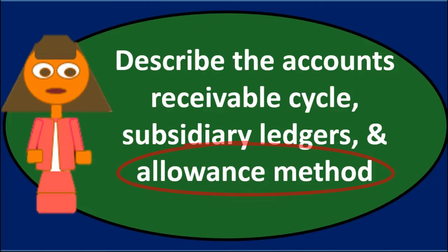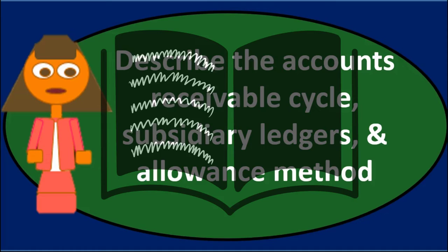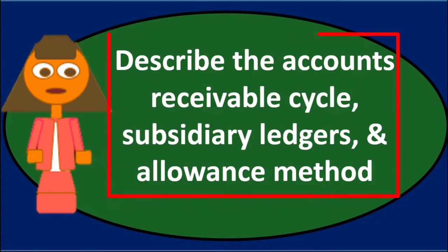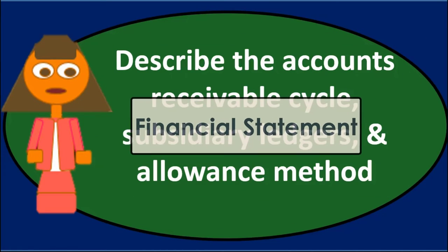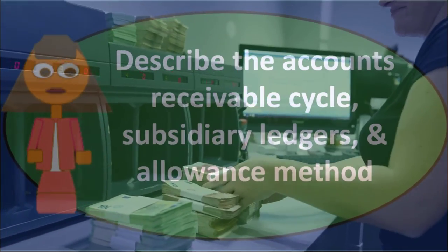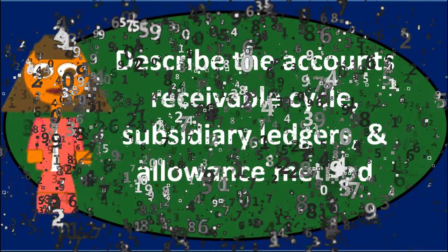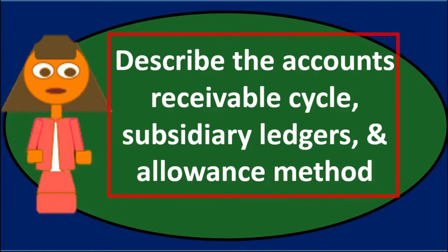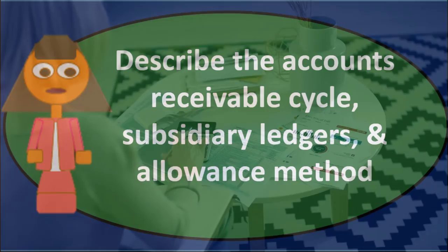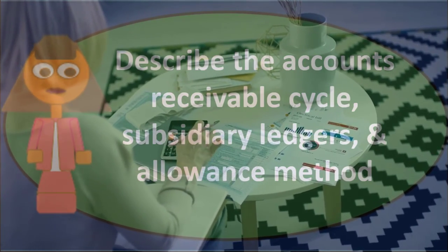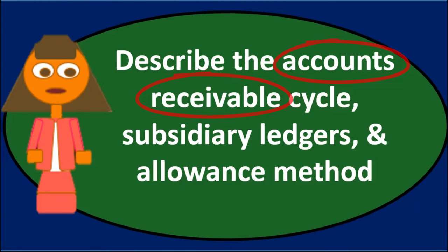The next problem to address has to do with the allowance method. If we don't make some type of estimate for the receivables that we think are going to be uncollectible, then we're overstating the receivables. We deal with that using the allowance method. Note that we have to put the receivables on the books — if we wait until we get paid to record them, that really distorts the financial statements. A creditor or bank reviewing financial statements wants to see the receivables on the books. However, we also want to know how much of that amount is not going to be collectible — something we can't know for sure, but we'd like to have some type of estimate. We want the receivables on the financial statement, but we also want to show how much we believe will be uncollectible in order to represent our balance sheet position as accurately as possible.